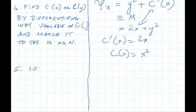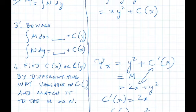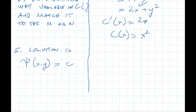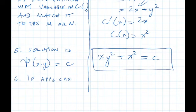Number five. The solution is given by psi of xy equal to some constant c. Psi is here xy squared plus c, c of x, and that is x squared. Solution is given by this. And number six, use initial condition to find c. Our initial condition was one comma two. That gets us c equals five.